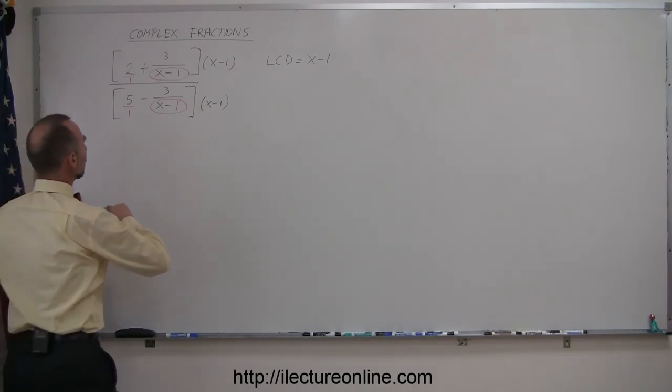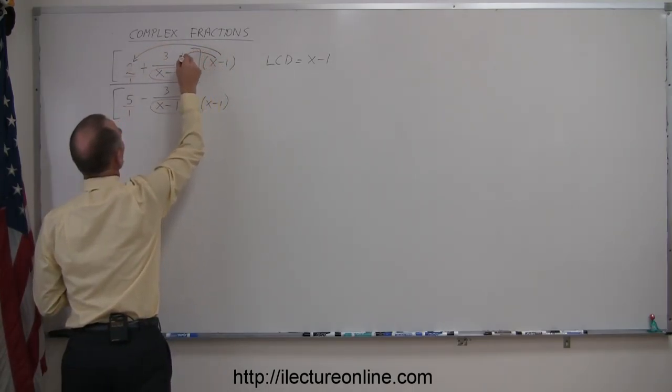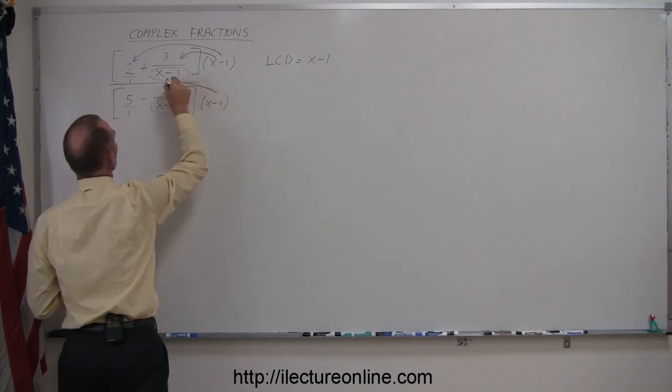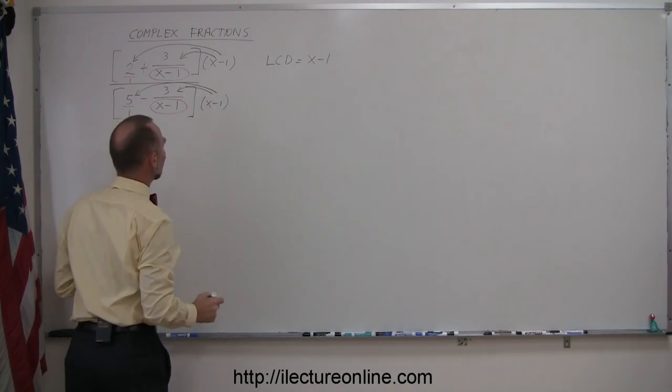Now we're going to multiply x minus one times the number two and x minus one times this fraction. In the denominator, multiply x minus one times the number five and multiply it times this fraction there.